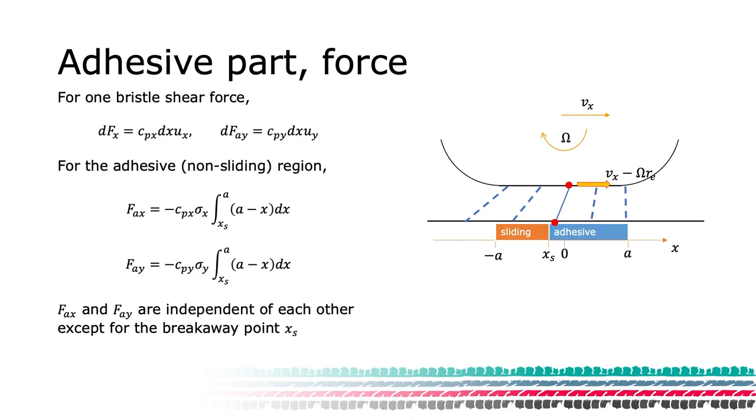For one bristle, we can, using the assumption of linear elastic shear stress, express the stress in the longitudinal and the lateral direction as the deflection previously derived times the stiffness. The stiffness, not necessarily equal in the two directions, is expressed by coefficients CPX and CPY times the width of the bristle, denoted DX.